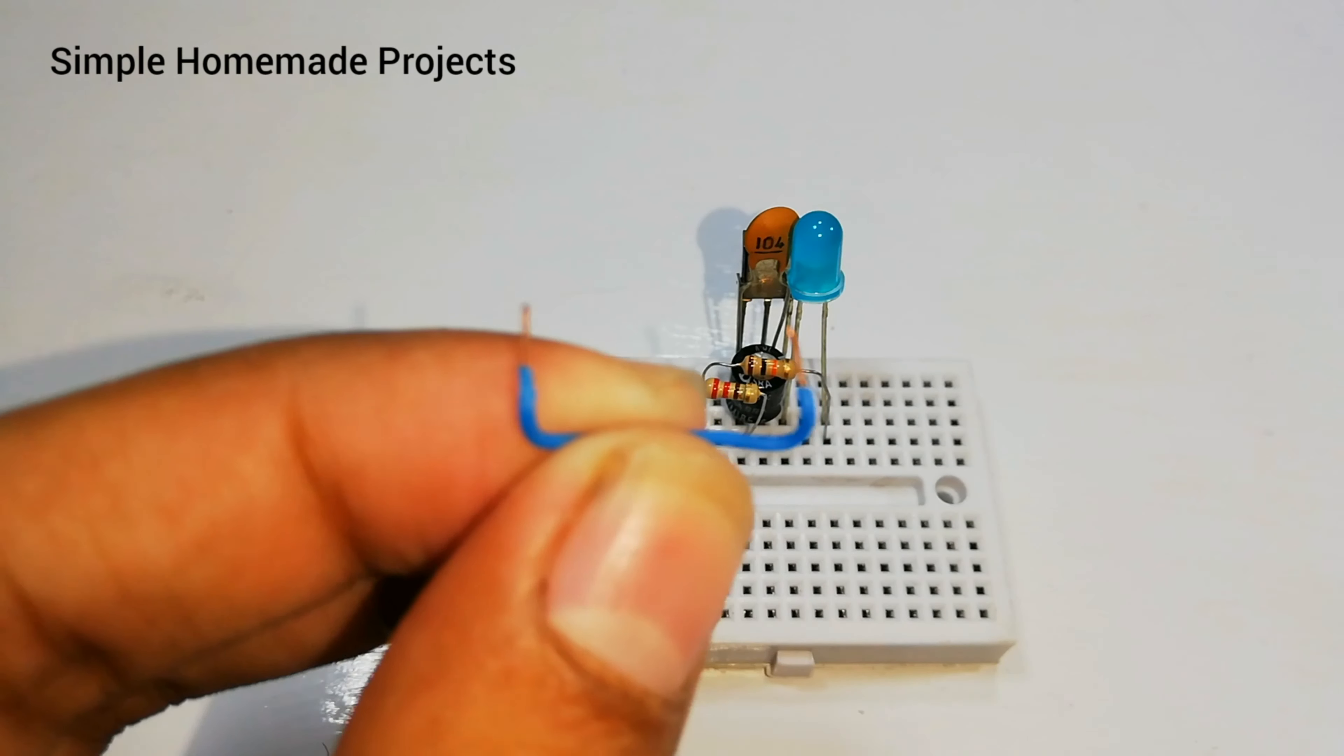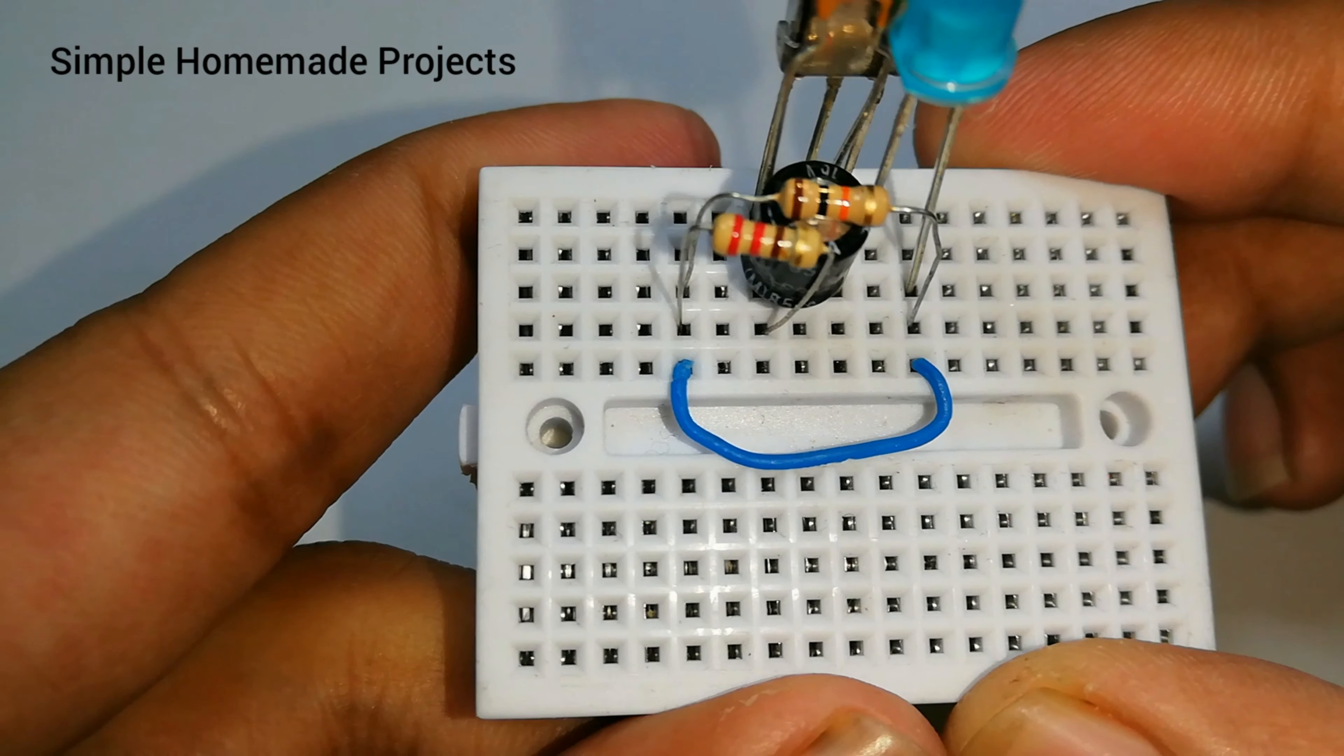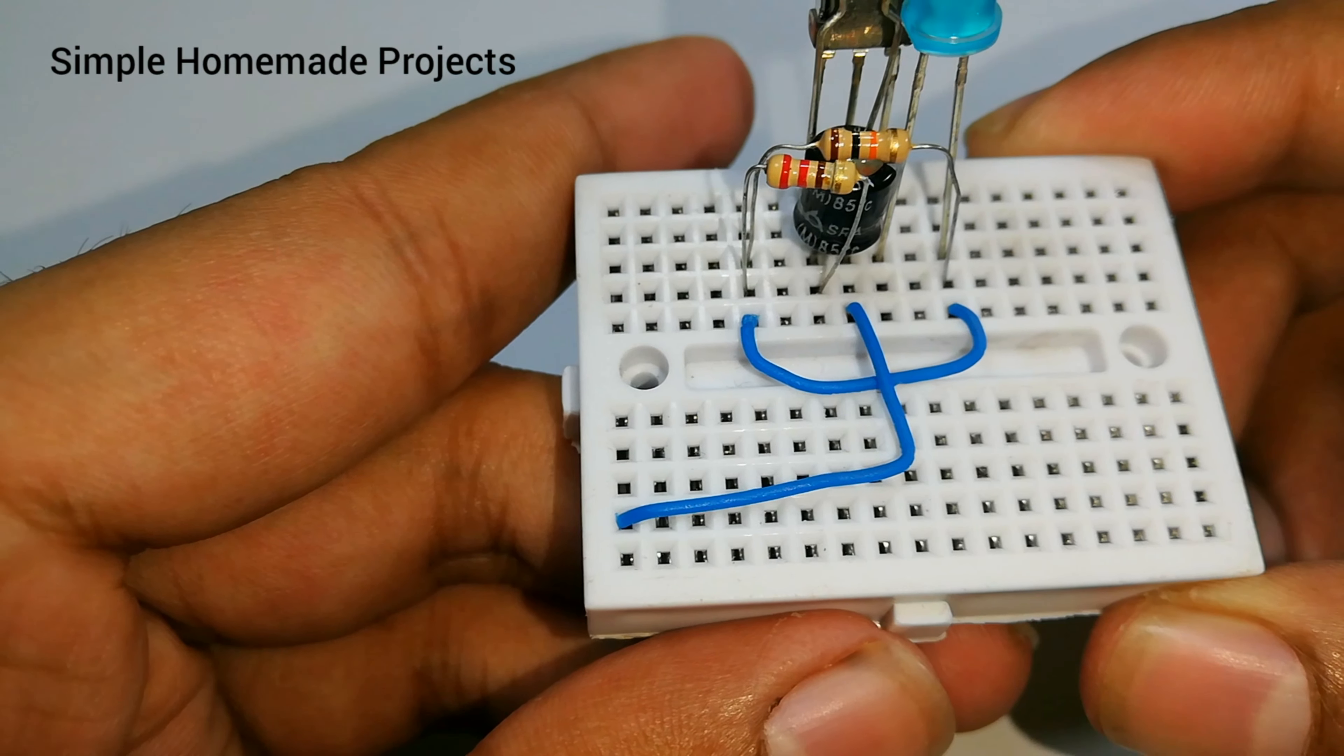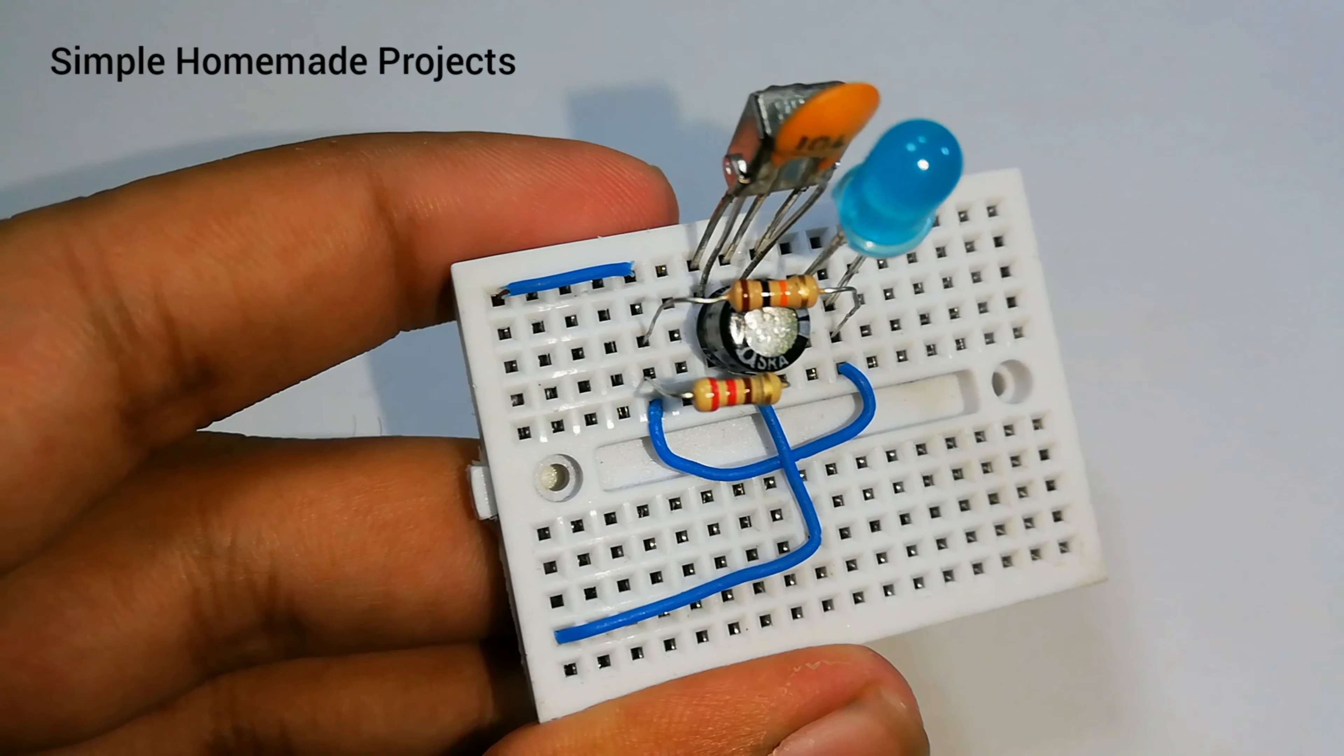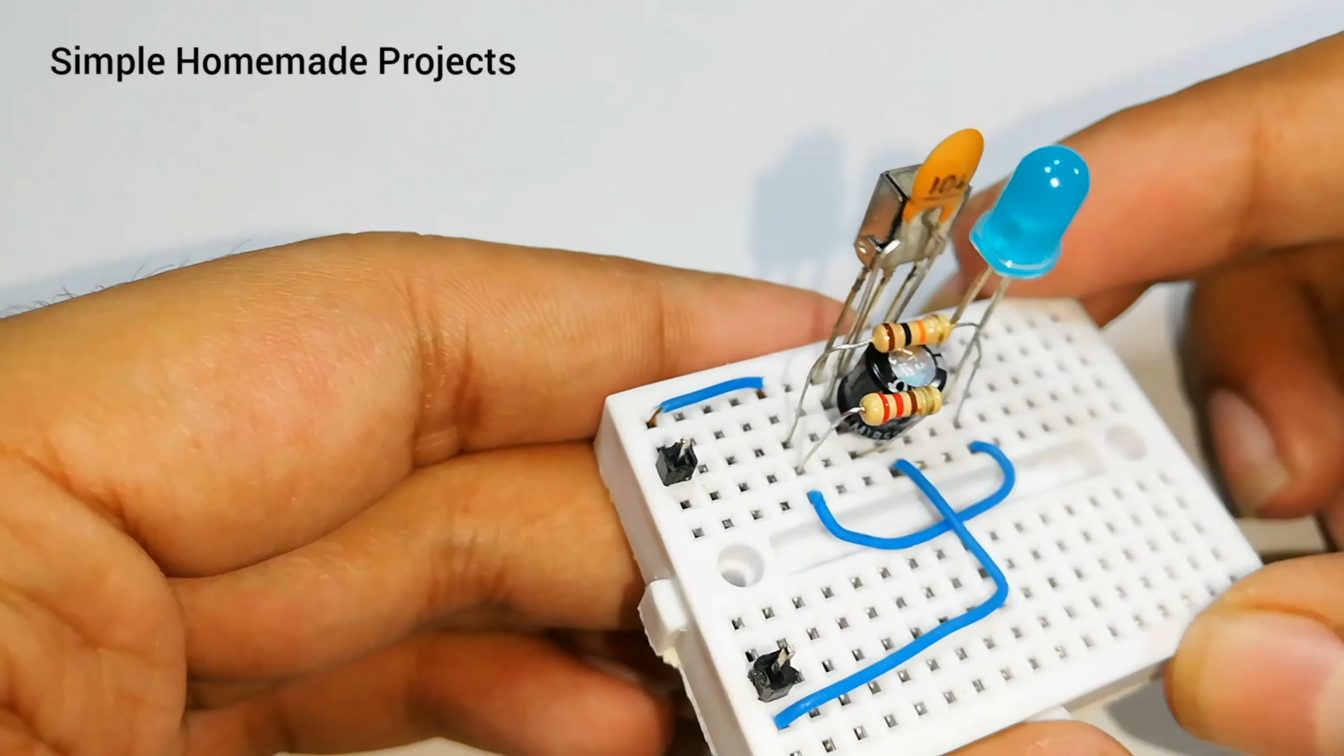Take a jumper wire and connect it between positive terminal of LED and junction point of the resistors. Now connect another jumper wire between middle pin of the receiver and a free rail. Take another jumper wire and connect it between junction point of resistors and a free rail. Now connect male headers to these rails.